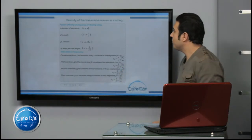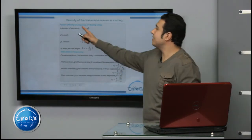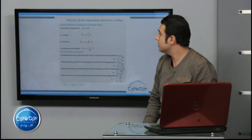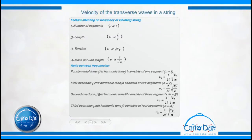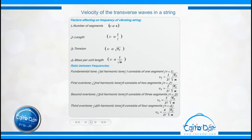What are the factors affecting the frequency of vibrating strings? First of all, the number of segments. If the number of segments increases, the frequency increases. So the relation between them is directly proportional — frequency nu is directly proportional to n, which is the number of segments. This is the first factor affecting frequency.